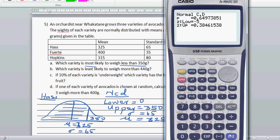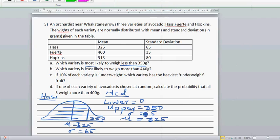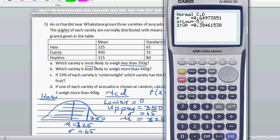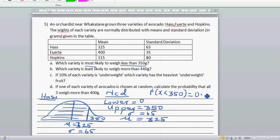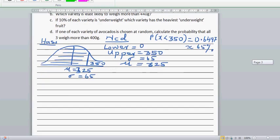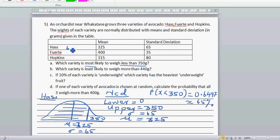That is 0.6497. The probability that x is less than 350 grams is, if you write this, 0.6497. If you want to write this as a percent, this is approximately 65%. You can say 65% of the avocados will be less than 350 grams for the variety of Hass. So for Hass it is 65%.